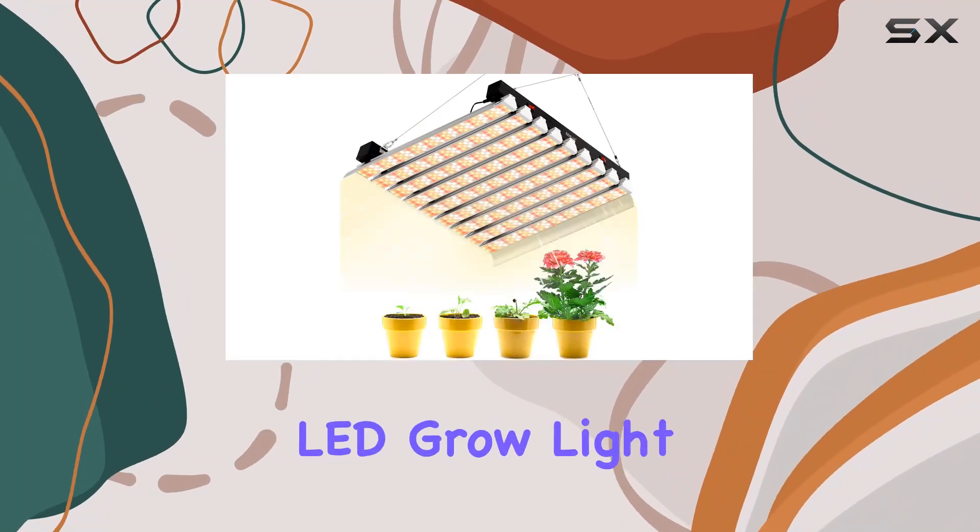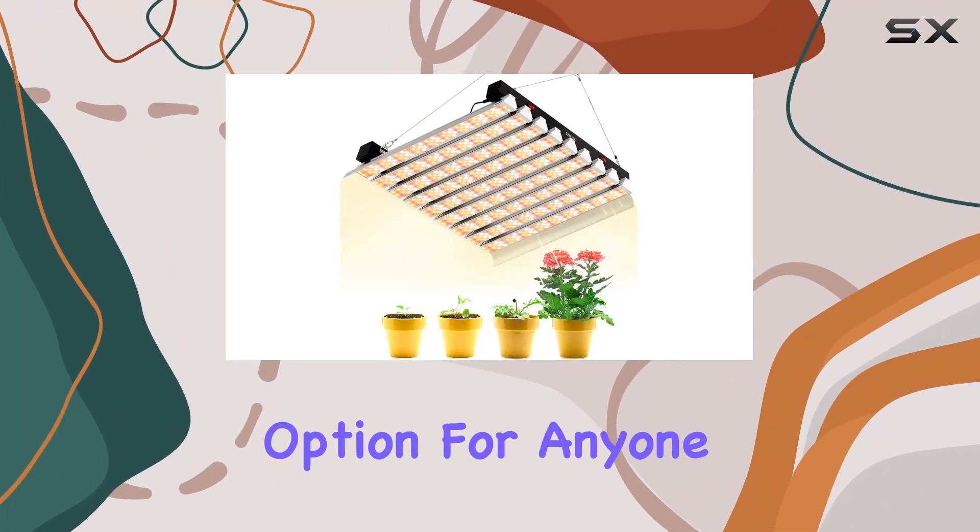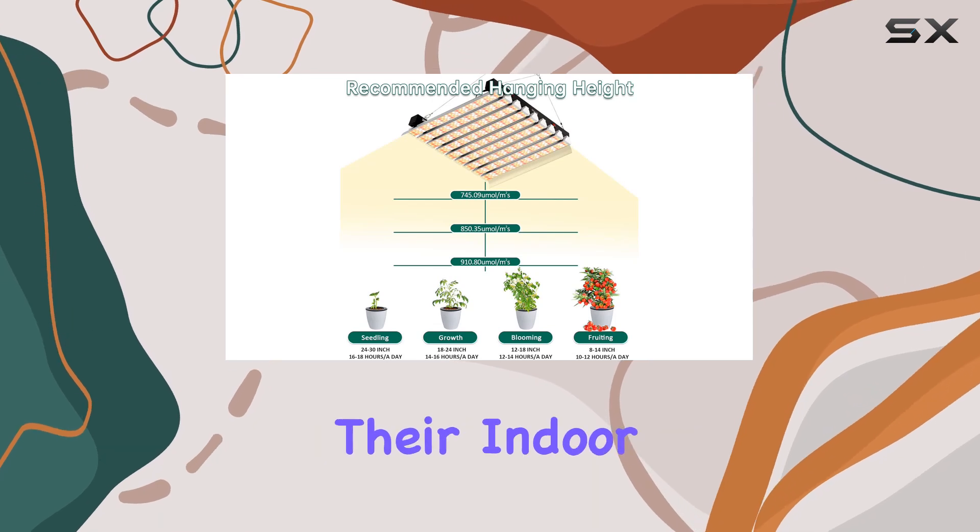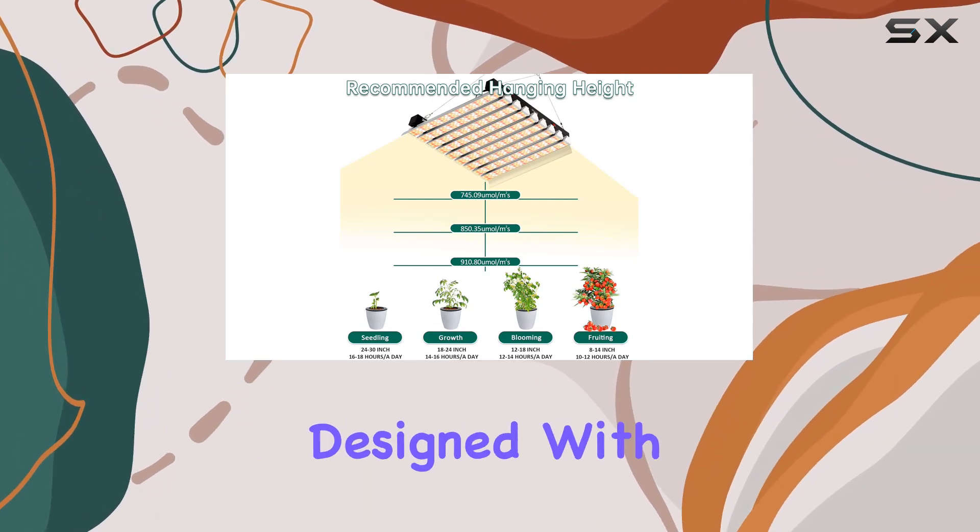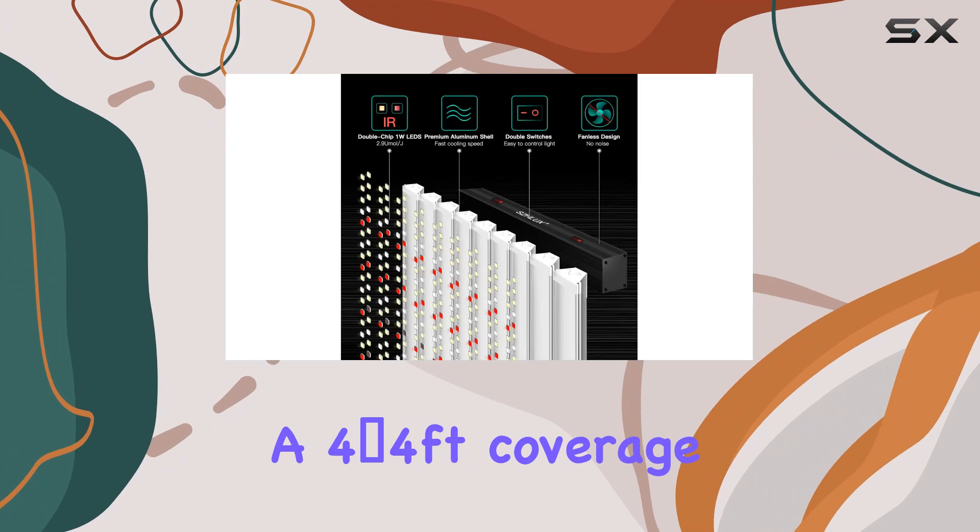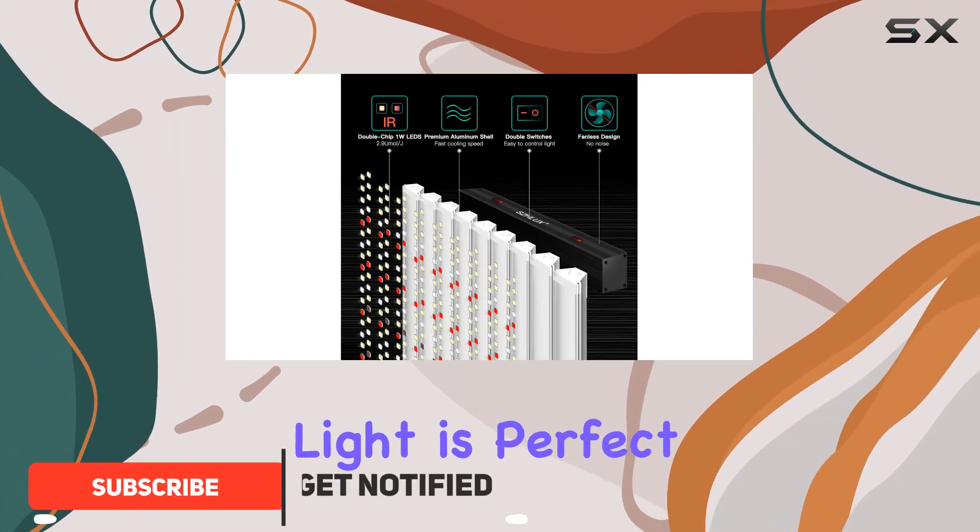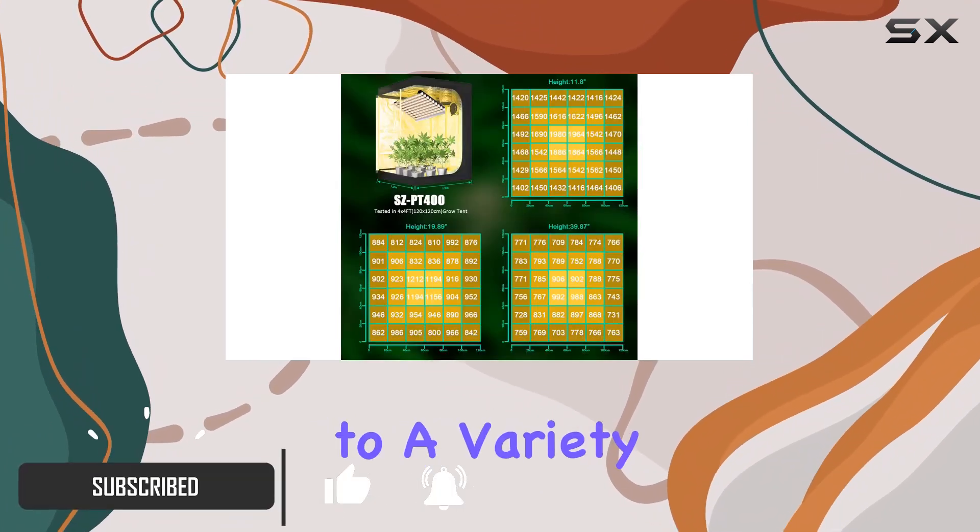The Schlux 400W LED Grow Light is an exceptional option for anyone looking to enhance their indoor gardening experience. Designed with a 4 by 4 foot coverage area, this grow light is perfect for providing ample light to a variety of plants.